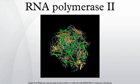RPB5, in humans, is encoded by the POLR2E gene. Two molecules of this subunit are present in each RNA polymerase II. RPB5 strongly interacts with RPB1, RPB3, and RPB6.